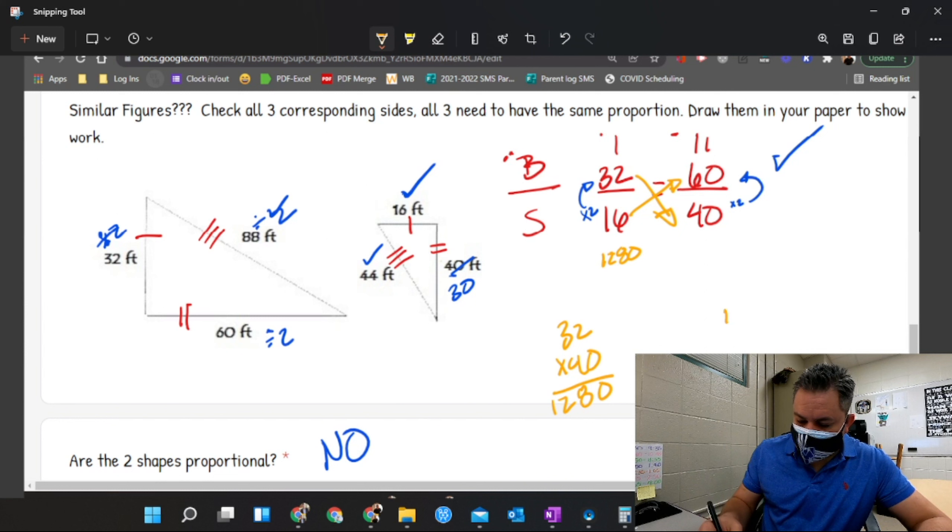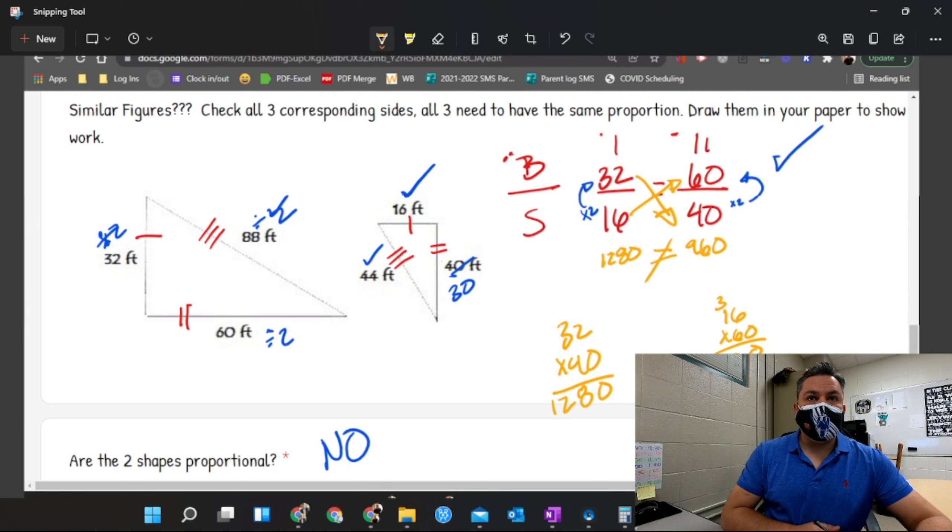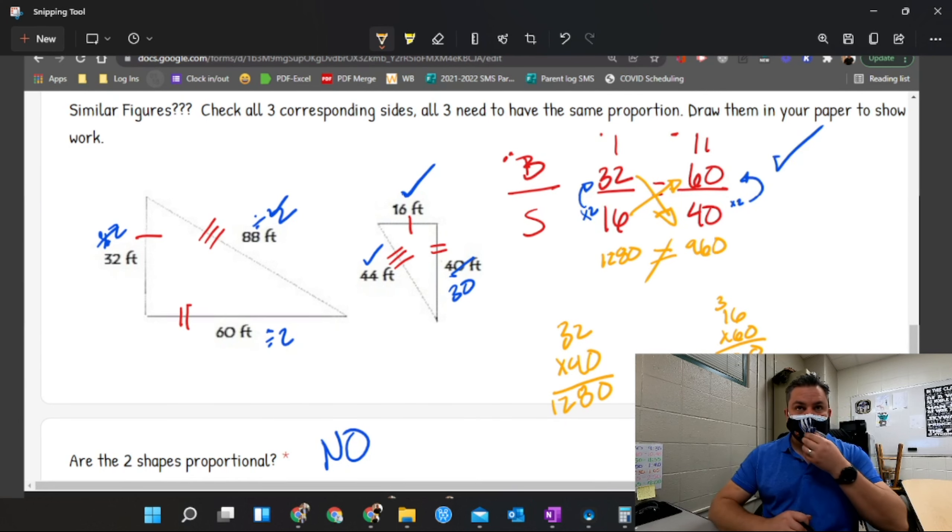Then multiply these two and put the number on the bottom. So I have 16 times 60. This is 6, carry the 3, this is 6 and 3 is 9, 960. Are these two numbers the same? They're not the same, hence is not proportional. Any questions about this type of problems?